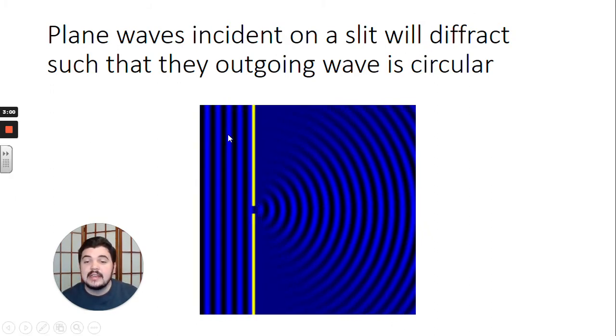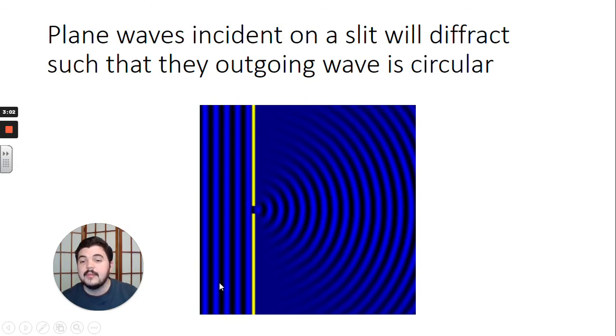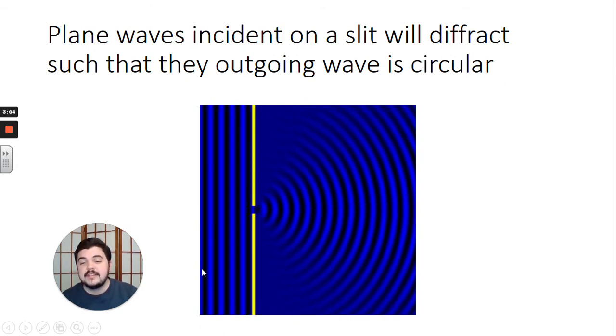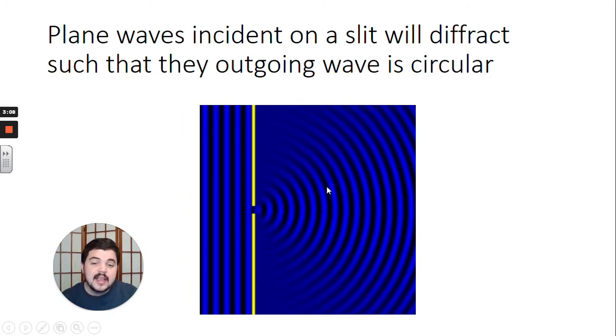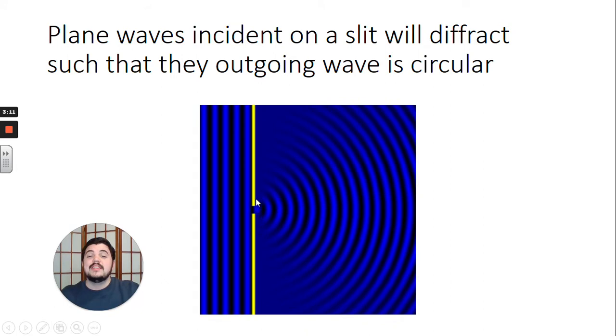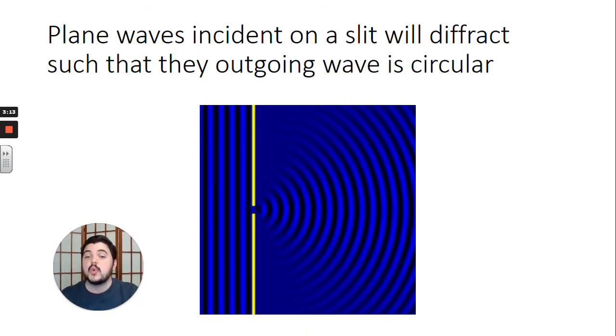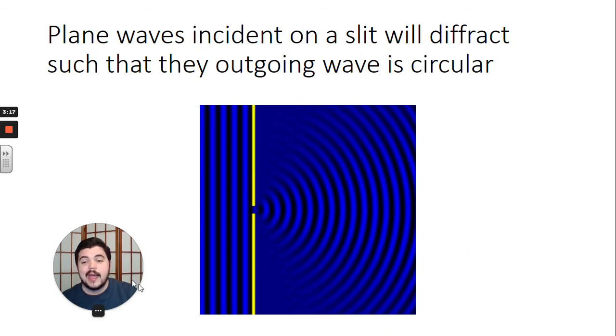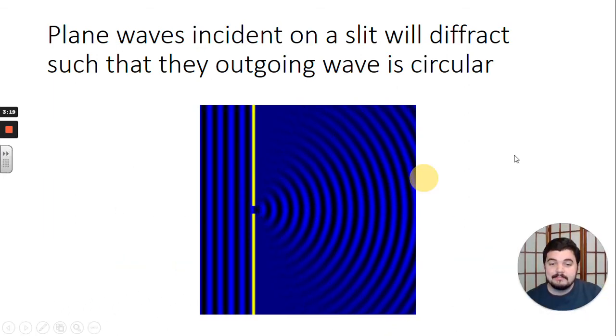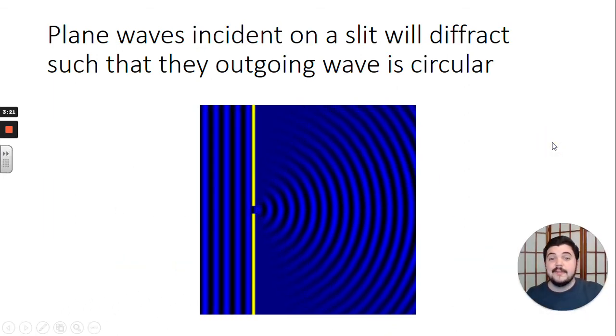So on the left, we have incoming plane waves. These waves are coming in. Each crest is parallel to the successive crest and the one that comes next. We come across the small barrier. The waves diffract. They bend around the barrier and that bending creates the circular pattern on the other side. So that's wave diffraction.